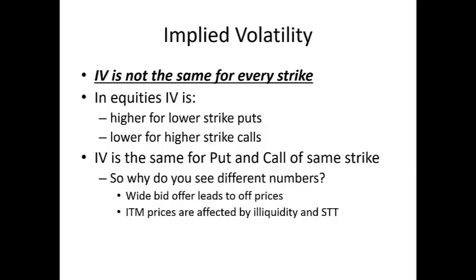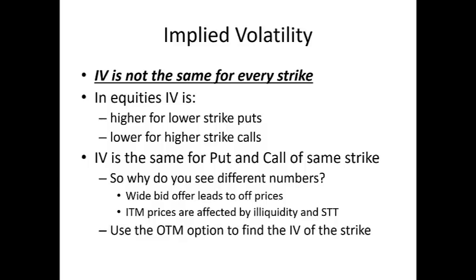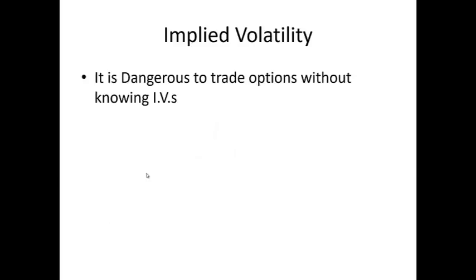Which IV should you use to construct an option chain? Always go with the OTM option. This is because of errors in the prices of ITM options due to illiquidity and STT. So when asked what is the volatility of the 10,200 strike when Nifty is at 10,500, the answer is always the volatility of the 10,200 put, not the 10,200 call.